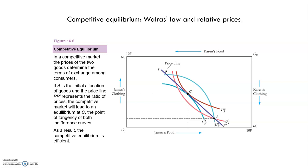When the prices of food and clothing are equal, each unit of food can be exchanged for one unit of clothing. As a result, the price line PP prime has a slope of minus 1, because it will be exchanged one by one, and it describes all possible allocations that the exchange can achieve. Suppose that we have many James and many Karens in our market, and each James decides to buy two units of clothing and sell two units of food in exchange — this is going to move him from point A to point C.